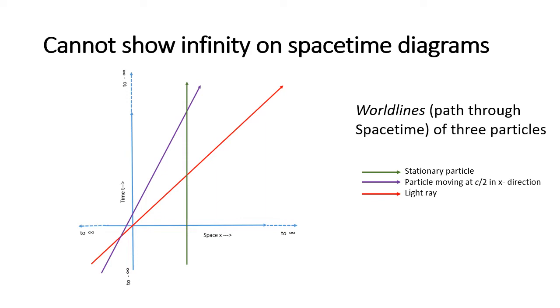The following diagram shows the path through spacetime or the world line of three different particles. The red line is a ray of light which of course moves at 45 degrees. The dark green line is a particle which remains forever fixed in a given location, so it has a vertical world line.